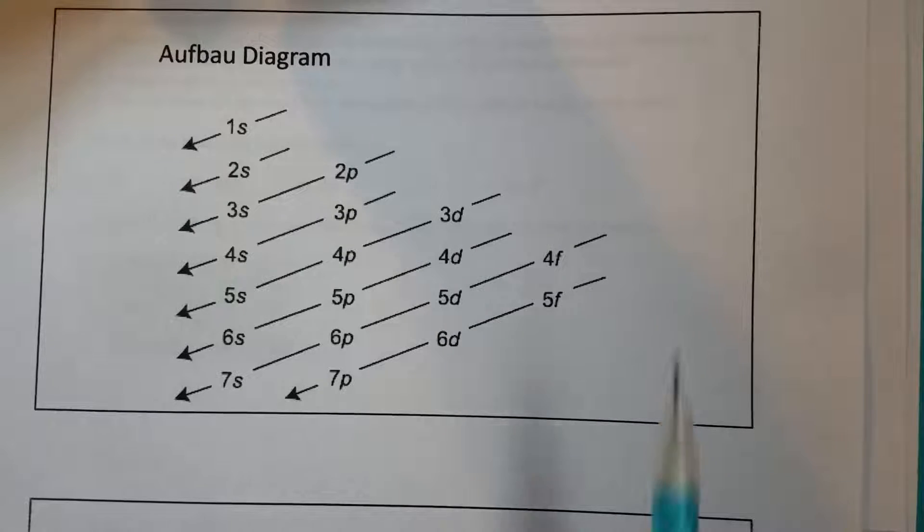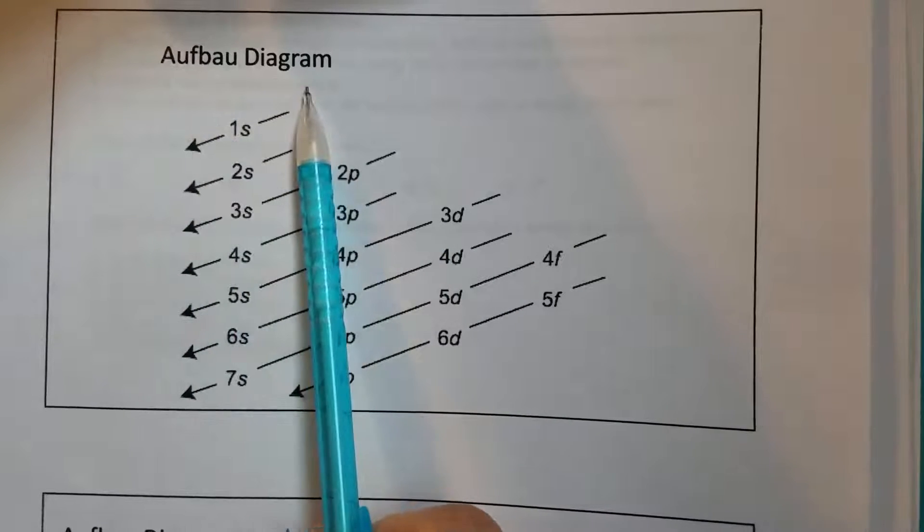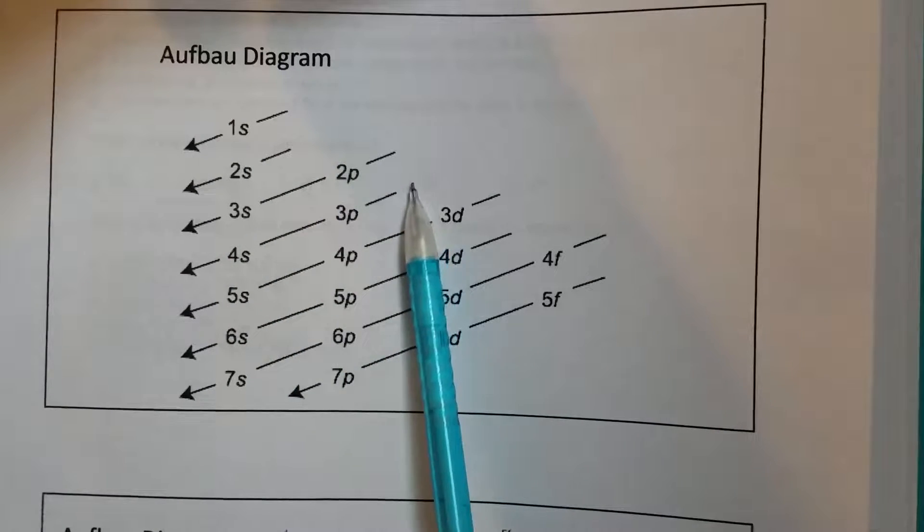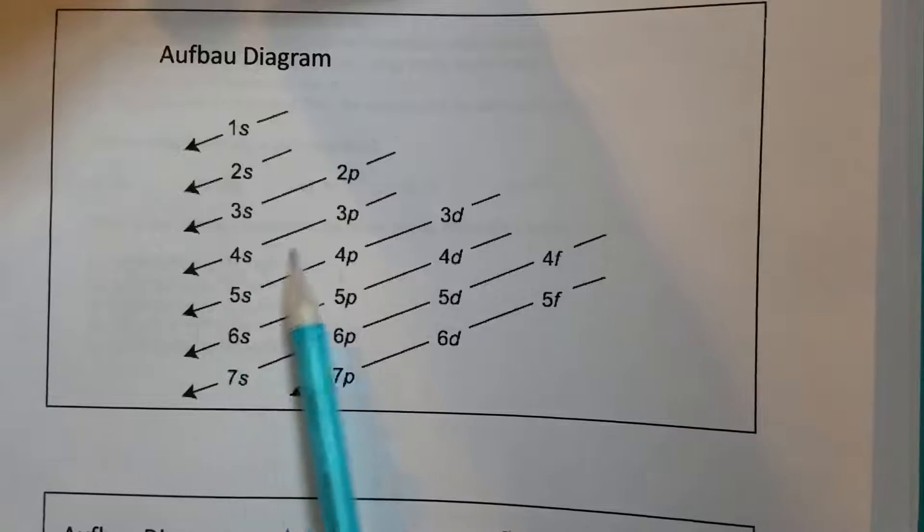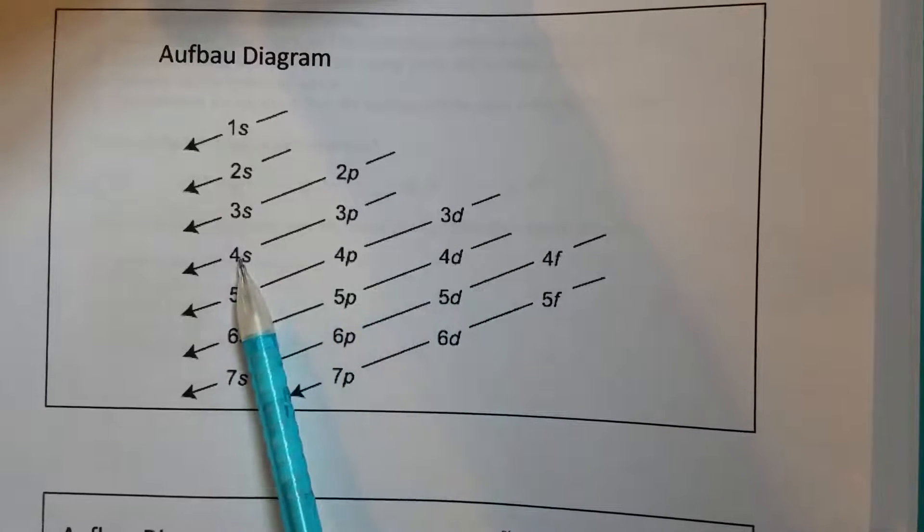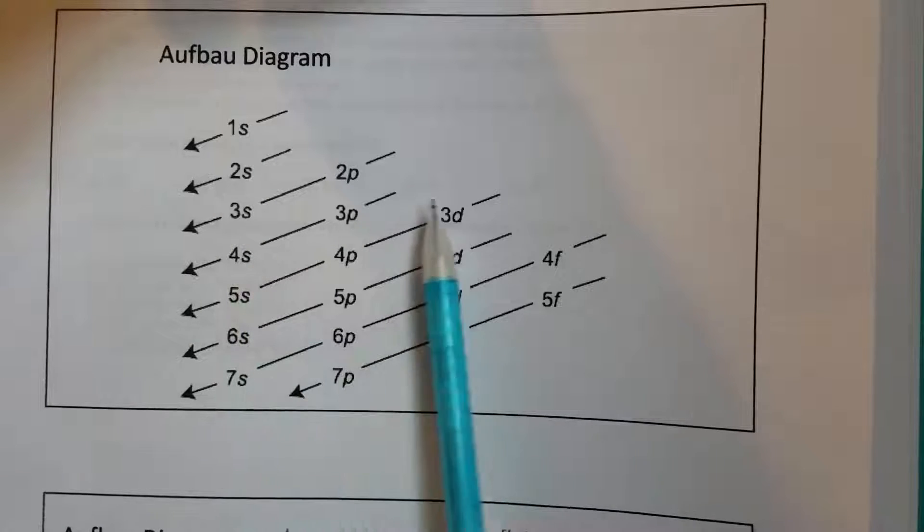Another way is to follow this Aufbau diagram: 1s, 2s, 2p, 2-3, 3p, 4s, then 3d. Okay, so 4s is before 3d.